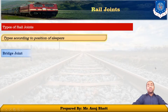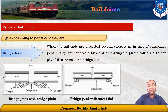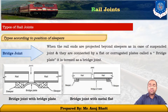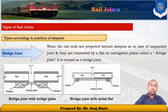The third type is the bridge joint. When the rail ends are projected beyond the sleepers, as in the case of suspended joints, they are connected by means of a metal flat or corrugated plate. The joint is termed as the bridge joint. These are very rarely used and are probably not in practical use.